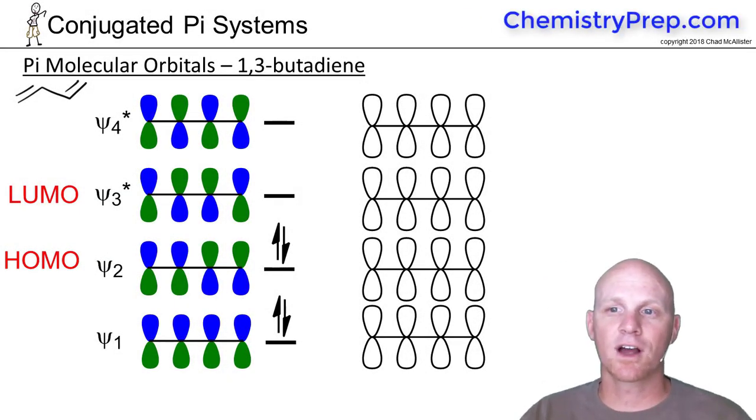So now that we've talked about ethylene, now we've got to talk about 1,3-butadiene. This is kind of where we always introduce you into conjugated pi systems.